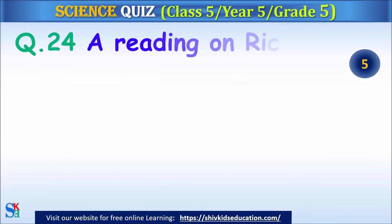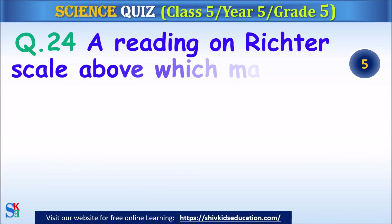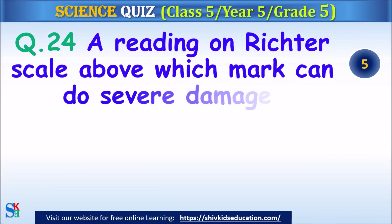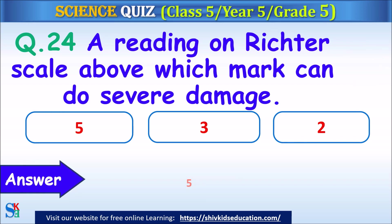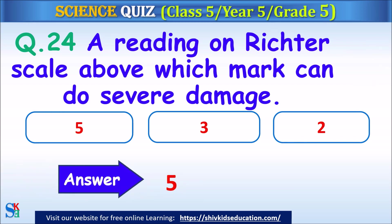Question 24: A reading on the Richter scale above which mark can do severe damage? 5, 3 or 2? The answer is 5.